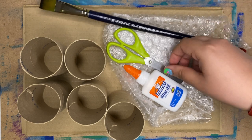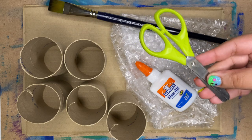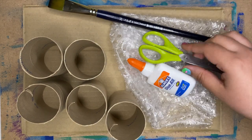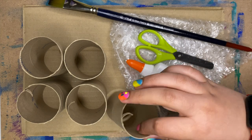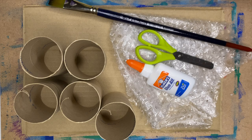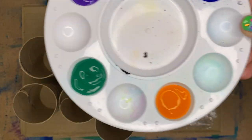What you need today is a paintbrush, scissors, glue, some old bubble wrap, that's optional, and lots of toilet rolls, empty toilet rolls, a piece of cardboard, and last but not the least, paint.